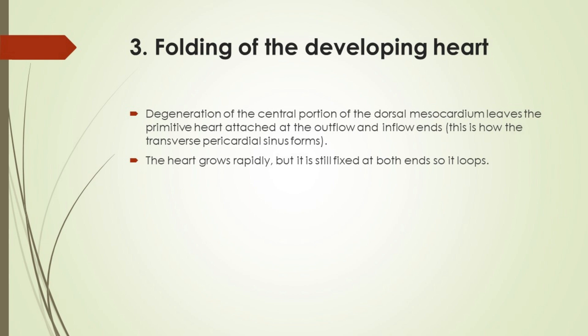Folding of the developing heart: Degeneration of the central portion of the dorsal mesocardium leaves the primitive heart attached at the outflow and inflow ends. This is how the transverse pericardial sinus forms. The heart grows rapidly but is still fixed at both ends, so it loops.